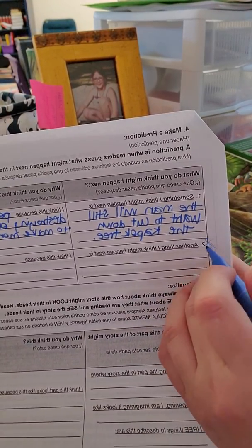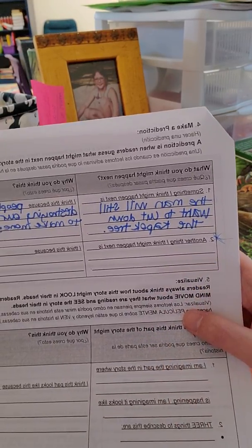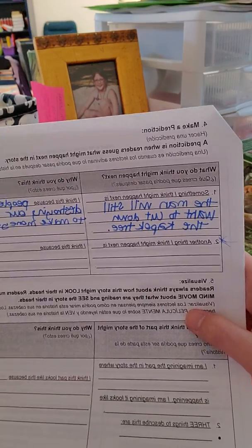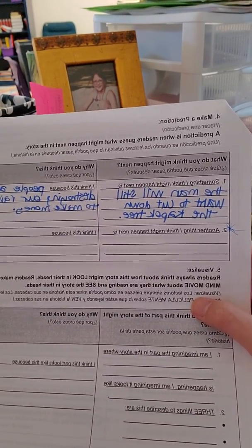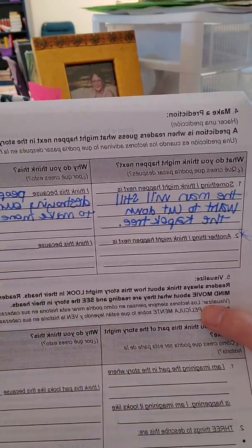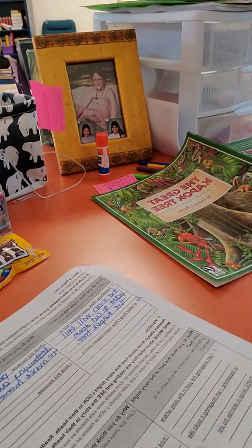So now I want you to come up with another thing that could happen next based off what's happened in the story. So you're going to come up with another thing I think might happen next is blank. Then tell me why you think this. I think this because blank happened in the story, or I think this because I know this from my own personal experience, or I know this about rainforests. Alright, so let's keep going.